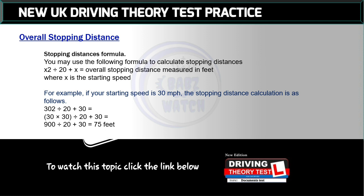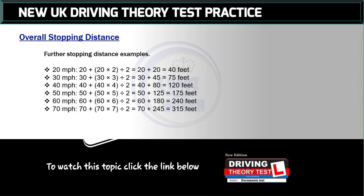You may use the following formula to calculate stopping distances. For example, if your starting speed is 30 miles per hour, the stopping distance calculation is as follows: 30 squared divided by 20 plus 30 equals 900 divided by 20 plus 30 equals 75 feet. Further stopping distance examples: 20 mph gives 20 plus (20 × 2 ÷ 2) = 20 + 20 = 40 feet. 30 mph gives 30 plus (30 × 3 ÷ 2) = 30 + 45 = 75 feet.